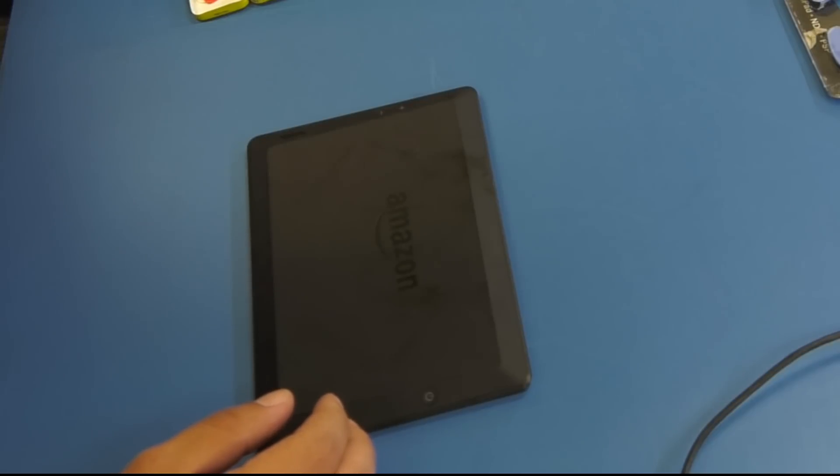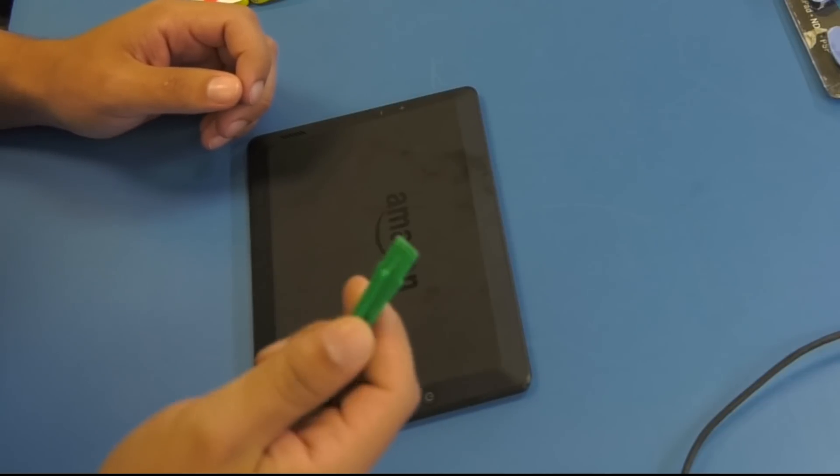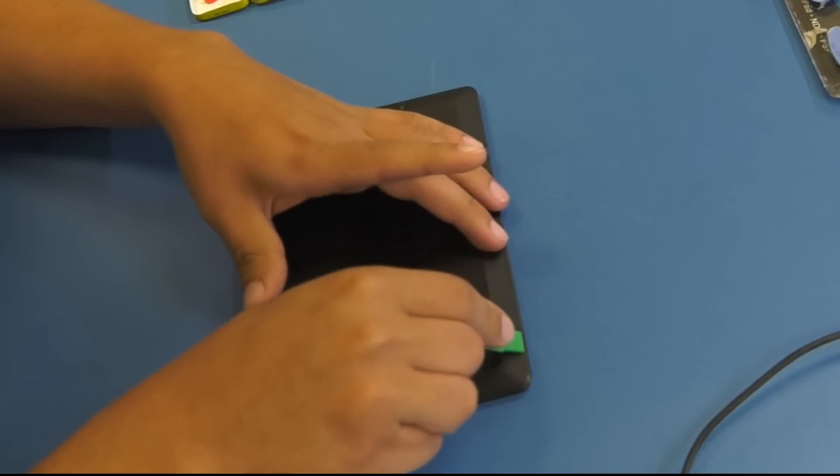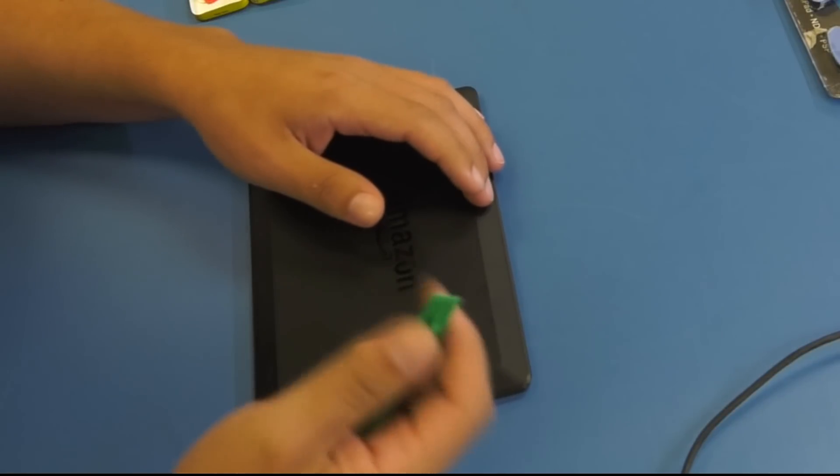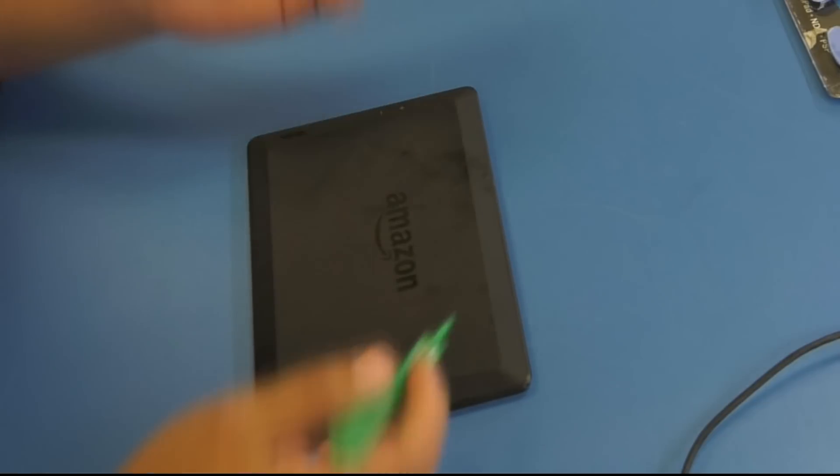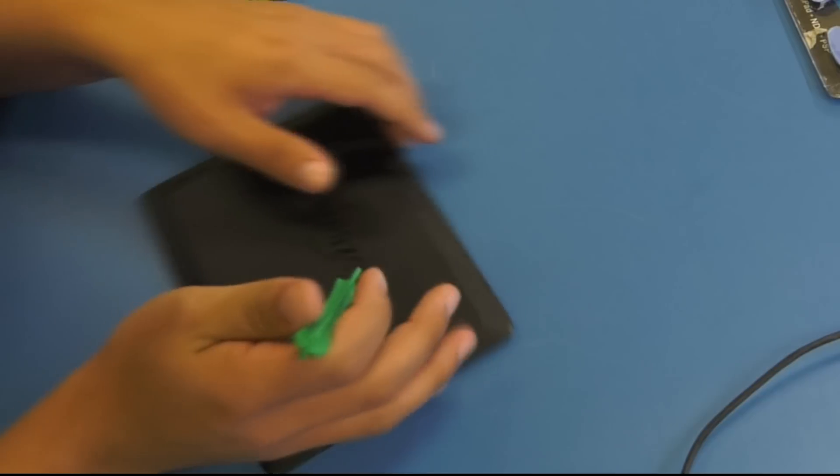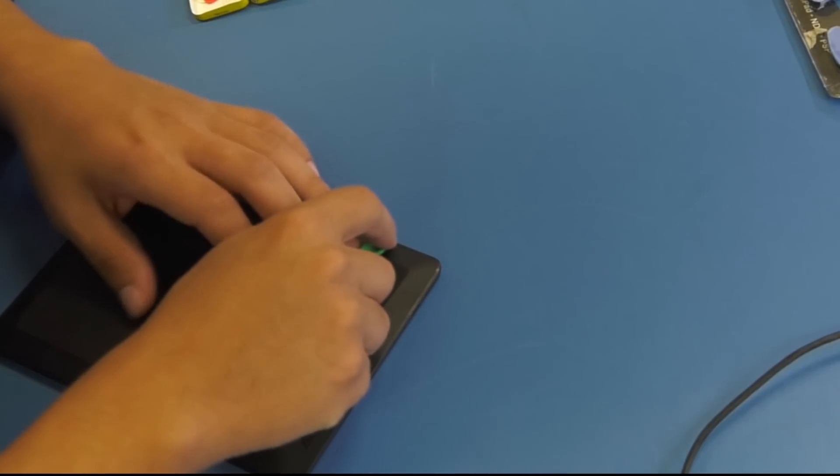I'm going to start off with a plastic, kind of like a screwdriver, but a flat screwdriver so I can pry it open. Since it's plastic, it's not going to damage the plastic. If you use a metal one, it will make some dents. We don't want to do that. So let's start off with one corner and then go around the whole thing.